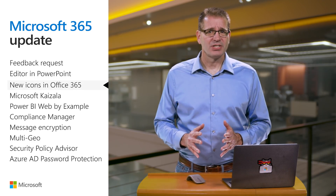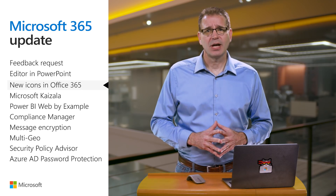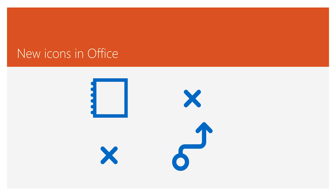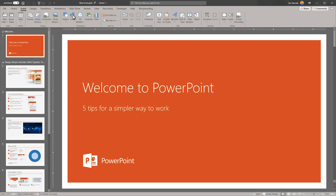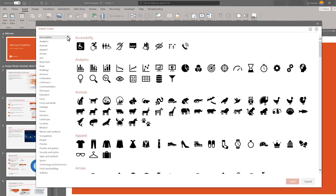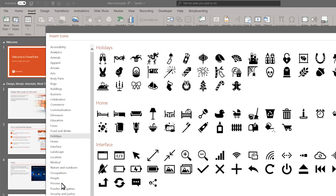Icons are a great way to express ideas visually, and they're simple to insert into your Microsoft Office documents. What I really like about icons in Office is, once in place, you can rotate, resize, and recolor them without any loss in the quality of the image. You can also separate the icon into its components and use only the pieces you want. There are nearly 350 new icons to choose from in Office 365, including categories like accessibility, holidays, and process.